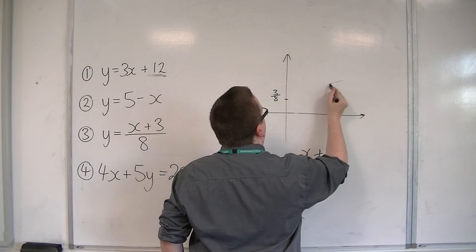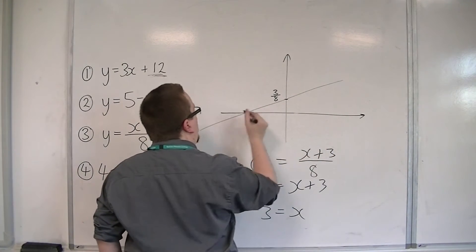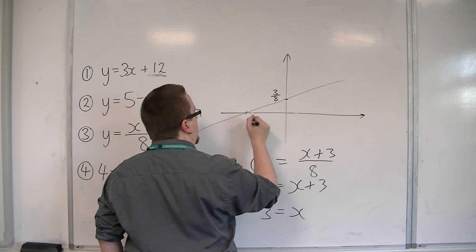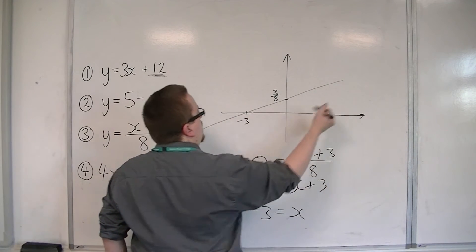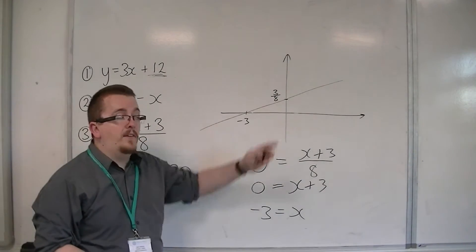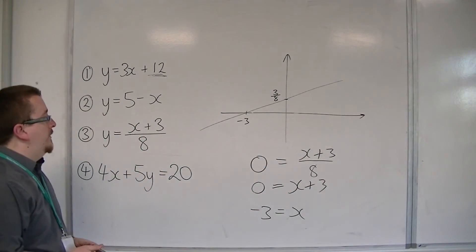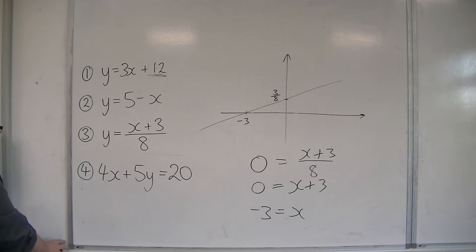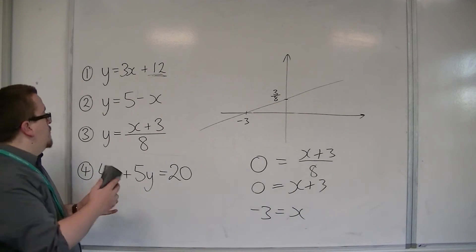So minus 3 is about there. So that means the line is going through minus 3. The line is going through those two points: minus 3 on the x-axis and 3/8 on the y-axis. That's how you can figure out number 3.